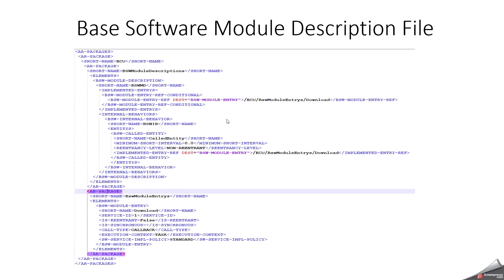The Base Software Module Description file has entities, for example base software implemented entries and base software module descriptions. One example of where exactly we use it: if your application software component has a direct and tight coupling with base software DCM — for example, request download, upload, and transfer exit — in this kind of case you should have a bswmd file. It mainly contains base software callable entities, schedulable entities, and measurement values.